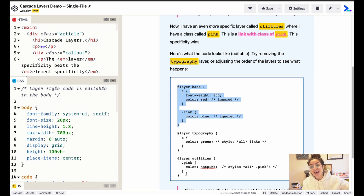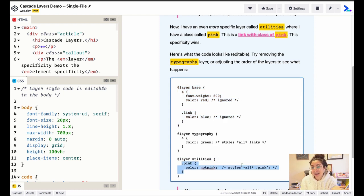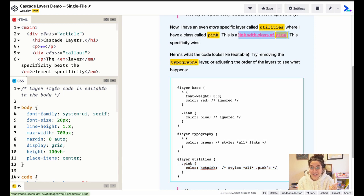So on top of that, we have a utilities layer. And in here we have a utility class called pink. And this class is applied on this link, a link with a class of pink. And so we're seeing this become pink.